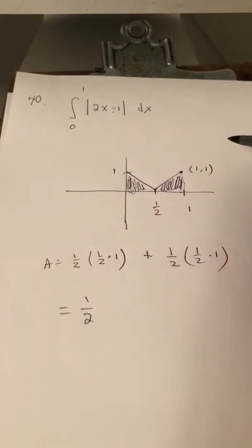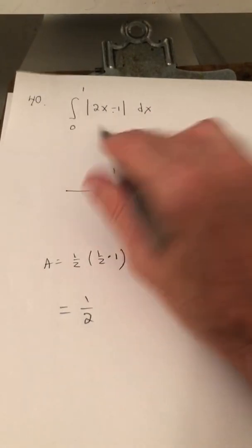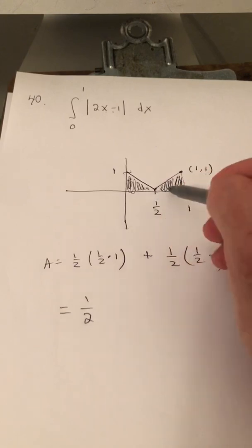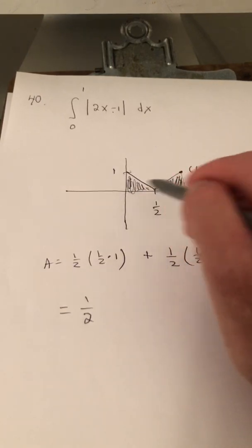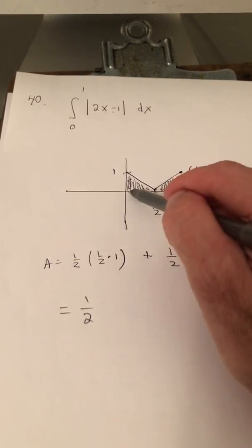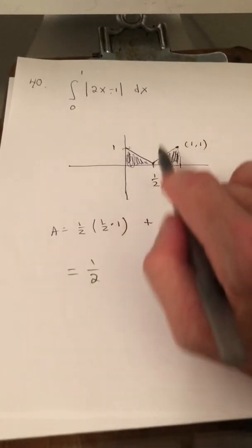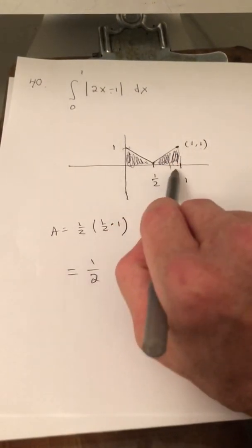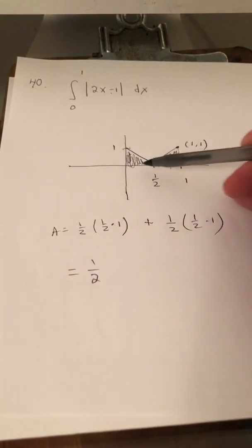When x is 1, y is 1. So we have our two triangles. And they're actually, they have the equivalent areas, because the base and height are the same for both of them. And the base of both of these is 1/2, and the height is 1.